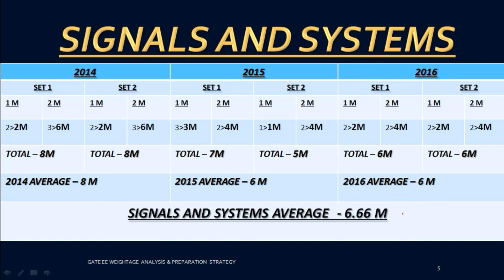Next is Signals and Systems. This subject requires a lot of practice, similar to circuits. The average is around 6.66, with 2014 showing 8.66, so you can expect six to seven marks from Signals and Systems. You cannot leave this subject — it is important.